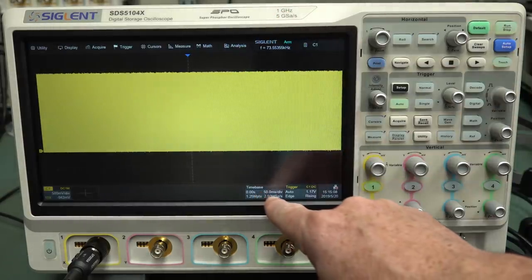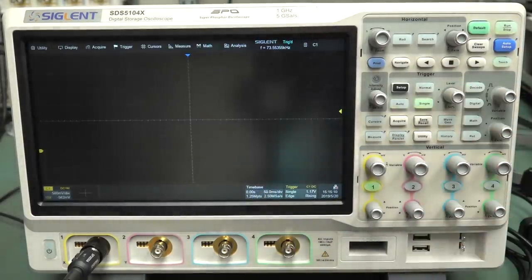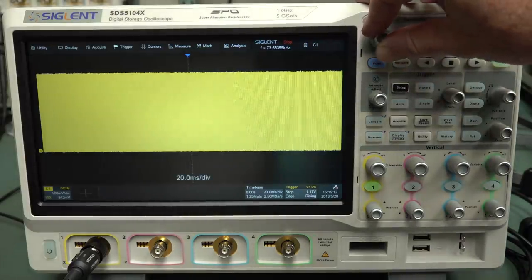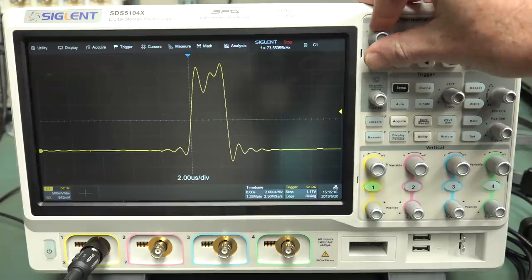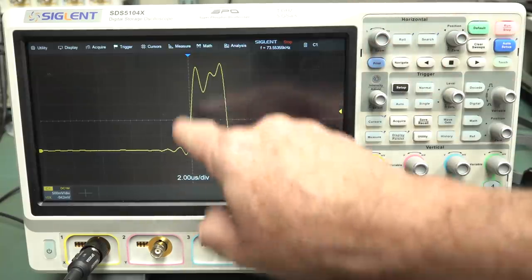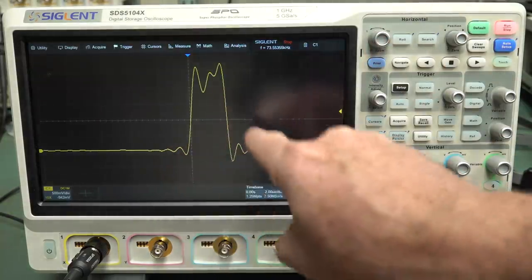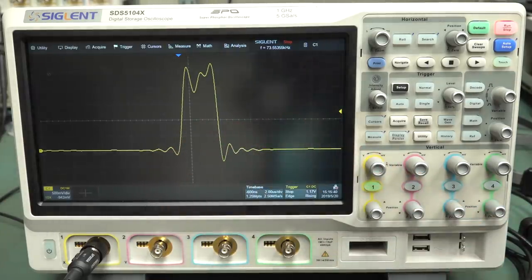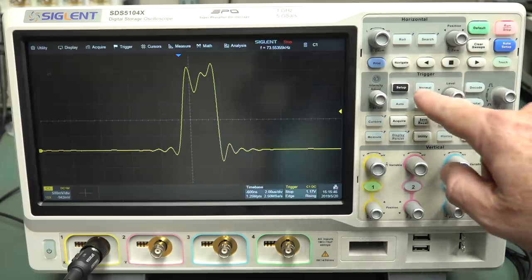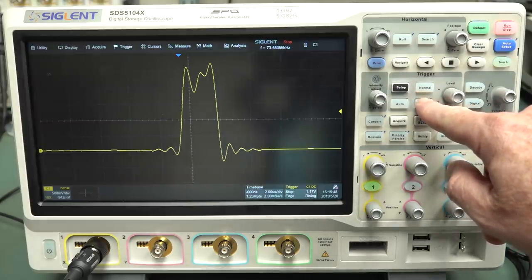Say we're on 50 milliseconds per division here. Let's single shot capture that. And then we can go zoom in at our data. And well, look at that. It looks like we've got a pulse there and it's got some ringing. You may be familiar with this sort of ringing as something that you'll get when you've got bad probing and things like that. Well, what signal are we actually measuring here?